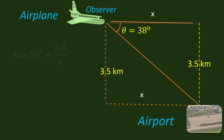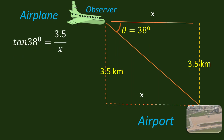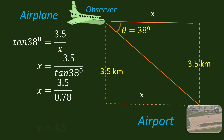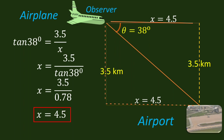We will use tangent. Tangent 38 degrees is 3.5 over x. Let us solve x using this equation. x is equal to 3.5 over tangent 38 degrees. We can find tangent 38 degrees using the calculator and substitute this in the equation. We have x is equal to 3.5 over 0.78. Finally, x is equal to 4.5 kilometers. This is the distance of the airplane to the airport along the ground.